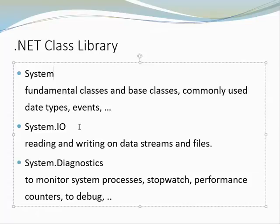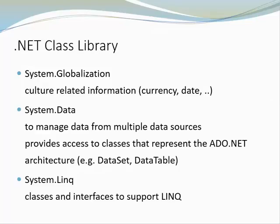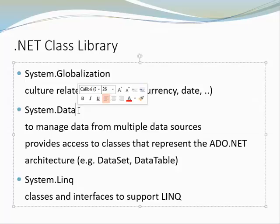System.IO includes functionality for reading and writing on data streams and files. System.Diagnostics helps us monitor system processes — it includes a class called Stopwatch, has a performance counter, and helps us debug. System.Globalization helps with culture-related information, for example different ways to display a date or currency. System.Data provides information that helps us manage data from multiple data sources, and also provides access to classes that represent the ADO.NET architecture.